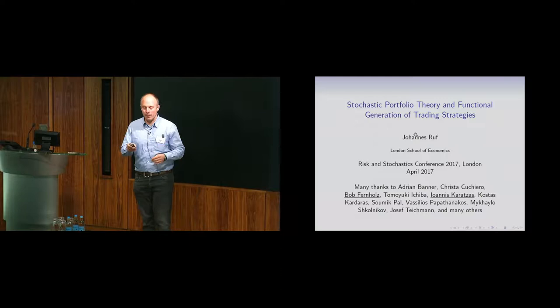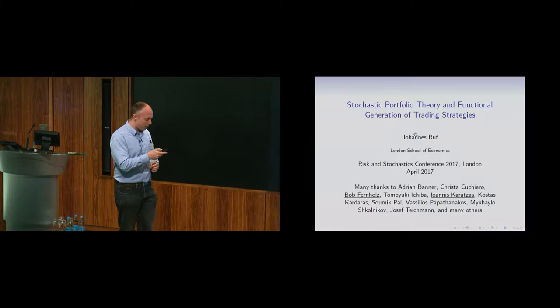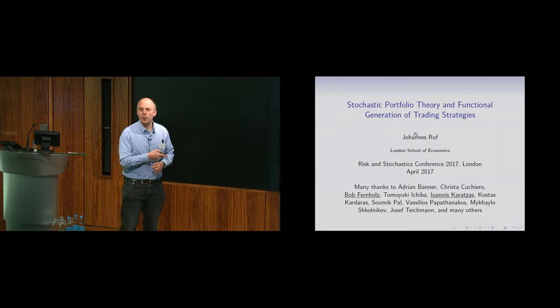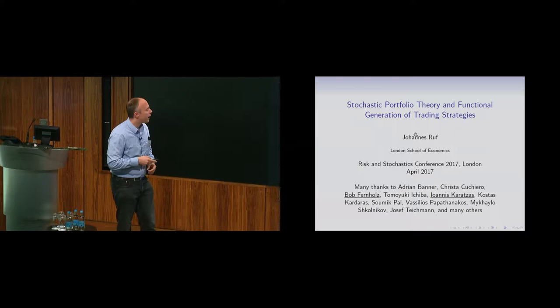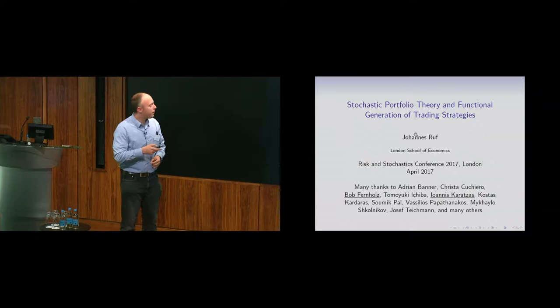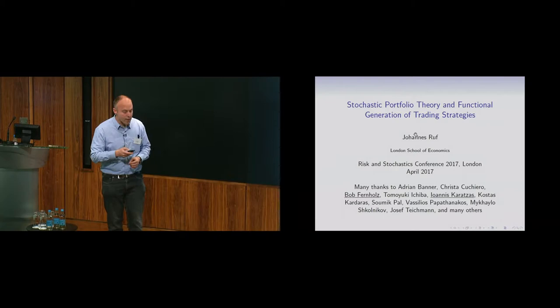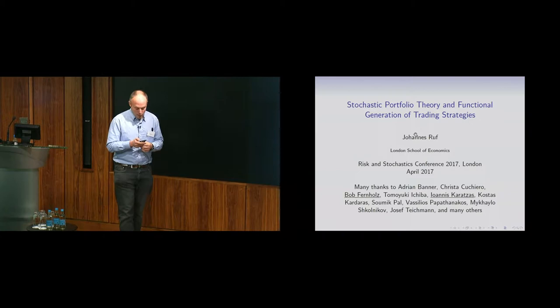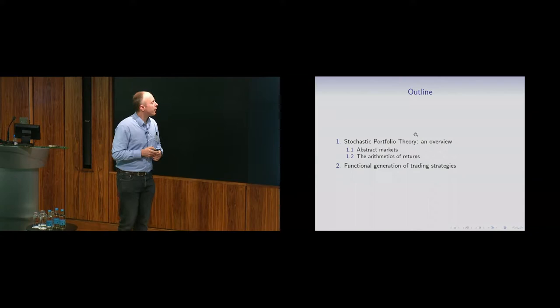So I have an abstract and it's a lie — I changed slightly the content of this talk, so don't read the abstract, please. What I'm presenting is a joint work with two people: Bob Fernholz and Janis Karatzas. Many of you will remember Bob Fernholz; he gave a talk here exactly one year ago about a related topic. I want to first give an overview — a crash course on stochastic portfolio theory for about 15 minutes — and then talk about functional generation of trading strategies.